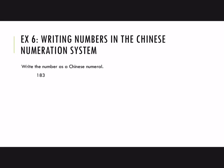How about 183? This would be 100, 8 tens, and 3 ones. And then write the corresponding Chinese symbols. So there they are, the symbols for 1, 100, 8, 10, and 3.